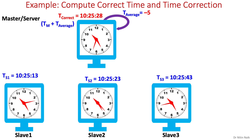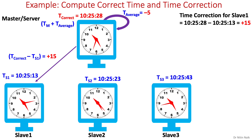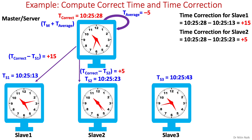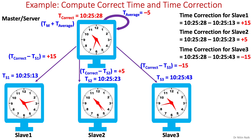Once we know the correct time, we can calculate the time correction for all the slaves. The time correction for slave 1 is plus 15 seconds, for slave 2 is plus 5 seconds, and for slave 3 is minus 15 seconds. Note that this adjustment time could be positive or negative, and it does not send an absolute time — instead, it only sends the adjustment time. Therefore, transmission delays do not interfere with synchronization.